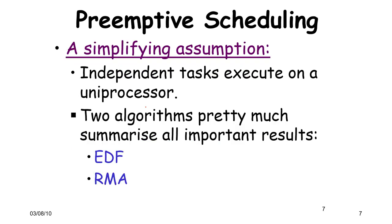Let us make a simplifying assumption: we have a uniprocessor in which the tasks are independent — at least for now we are not considering any dependencies between them. There are two algorithms which form the bedrock of this area. The first is EDF — Earliest Deadline First — and the second is RMA, where RM stands for Rate Monotonic Algorithm. These are the two major algorithms in the space of preemptive event-driven scheduling.